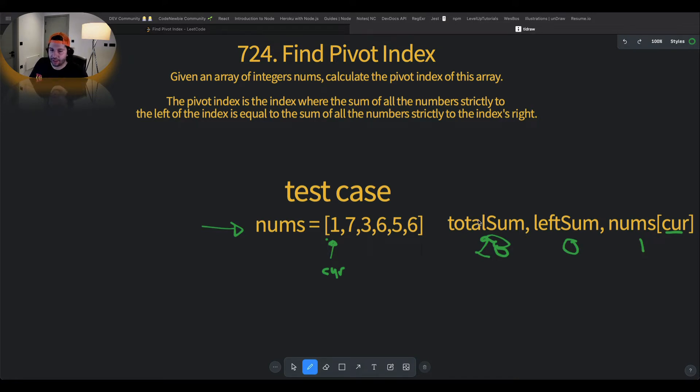If we have the total sum then we can say that the left sum is going to be equal to the total minus the current number minus the left sum. And if that's fulfilled, that means that we have found the right sum equivalent. Sweet. So let's work on that example together.